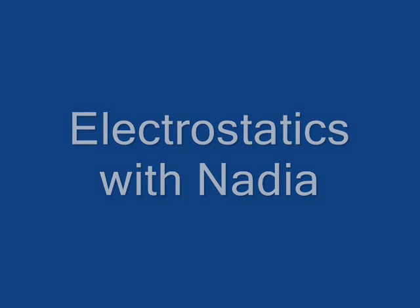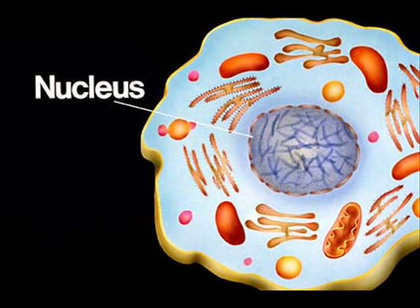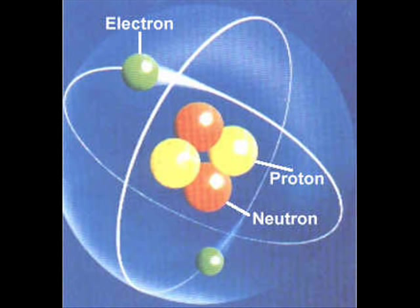Understanding electrostatics. Matter is composed of neutral atoms. The electrical neutrality of the atoms is due to the fact that the positive charge of the nucleus of the atoms is compensated by the negative charge of the electrons that surround it.